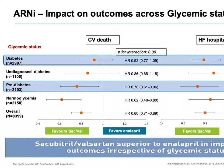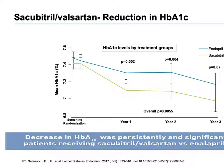Researchers then examined the ARNI molecule and whether it affects glycemic status and end outcomes. Looking at a forest plot comparing sacubitril/valsartan versus enalapril, the data consistently favors the ARNI inhibitor. Patients on sacubitril/valsartan also showed improvement in HbA1c, doing much better in terms of glycosylated hemoglobin control.